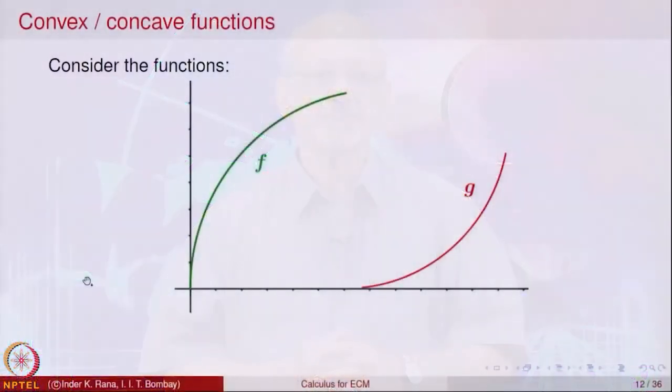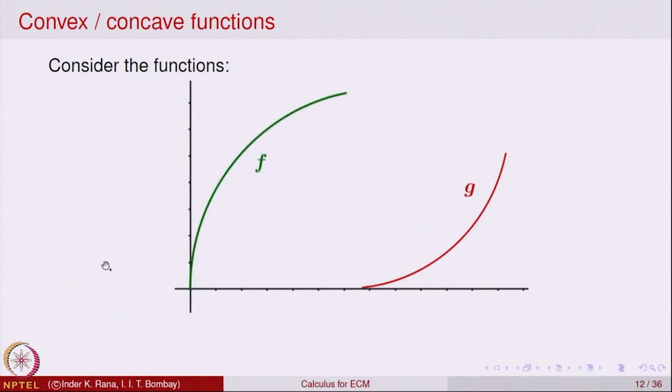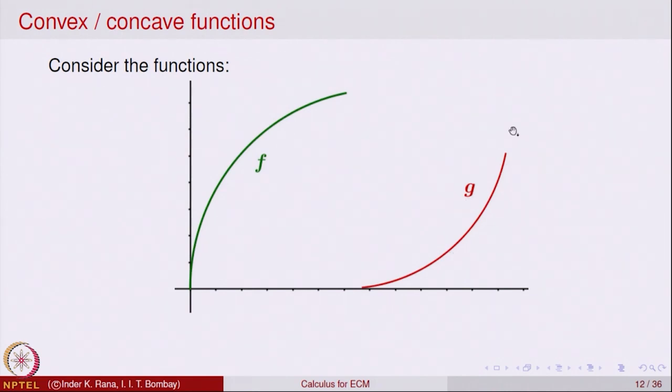These properties are captured by properties of the function called being convex and concave. To motivate this concept, let us consider the following examples of two functions. Mathematically, let us look at the graphs of these two functions: one function is f, the green one, and g is another function which is the red one. The question we'd like to ask is: what are the similarities between these two functions, and what are the differences?